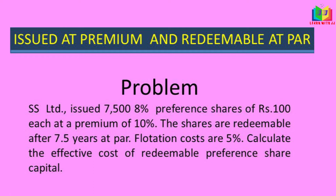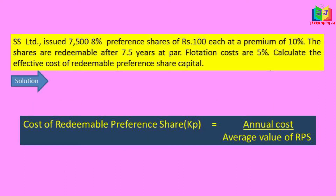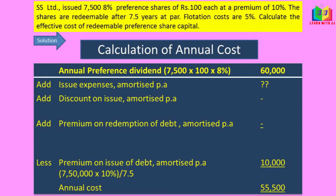We will start doing the problem now. The formula is annual cost divided by average value of redeemable preference share. First, we have to calculate the annual cost. The annual preference dividend is 7500 into value of the share into rate of dividend, and we will get 60,000.